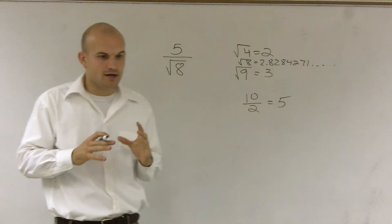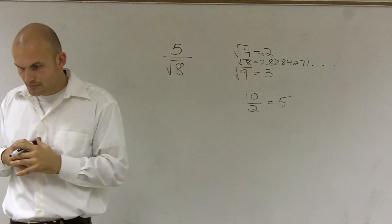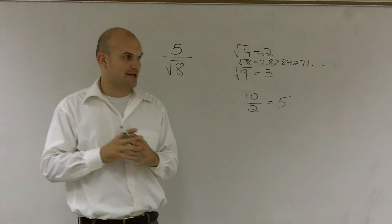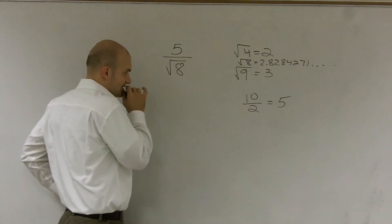So to get rid of the irrational number on the bottom, what we can do is rationalize the denominator. So what we're going to do is how do I get rid of the square root of 8? Well, think about it this way.